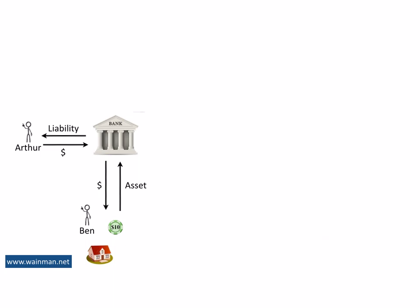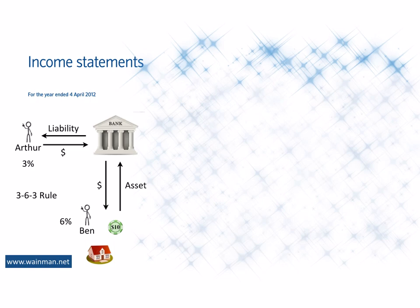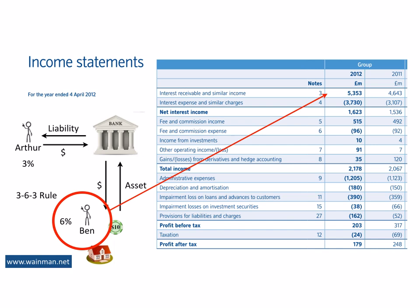The bank will pay Arthur, for example, 3% to borrow money from him and will charge Ben, for example, 6% to borrow money from the bank. This gives rise to the 3-6-3 rule, where a bank will borrow money at 3%, lend money at 6%, and at 3 o'clock in the afternoon, once it has lent out all the money it has borrowed, the employees can all go and play golf. Looking at the income statement of Nationwide, customers like Ben are paying a total of £5.4 billion in interest, depositors like Arthur are being paid £3.7 billion, and the bank is making a net interest income — a bit like gross profit — of £1.7 billion.